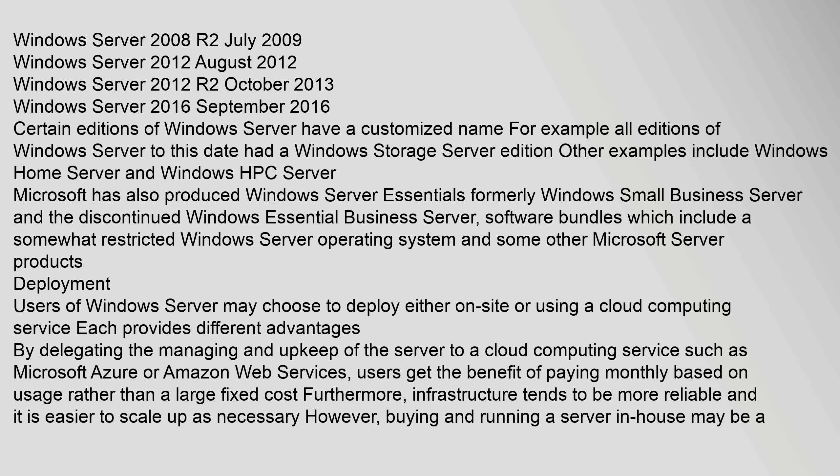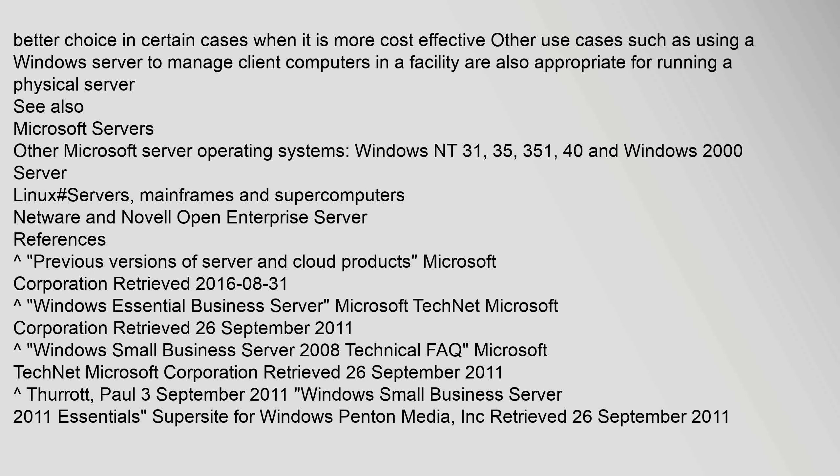Furthermore, infrastructure tends to be more reliable and it is easier to scale up as necessary. However, buying and running a server in-house may be a better choice in certain cases when it is more cost effective. Other use cases such as using a Windows Server to manage client computers in a facility are also appropriate for running a physical server.